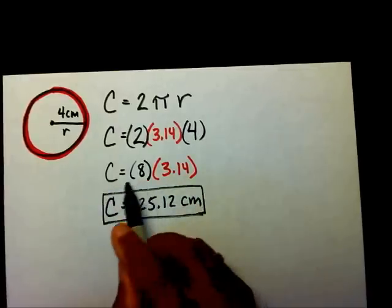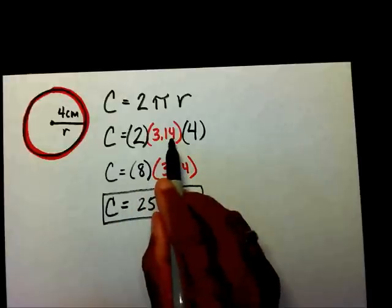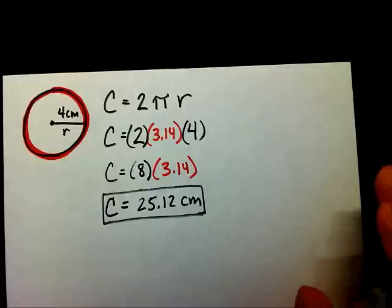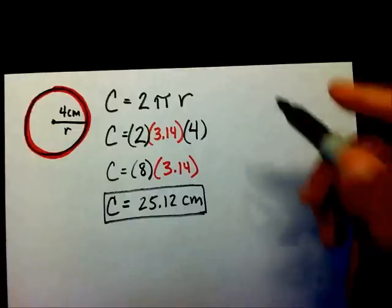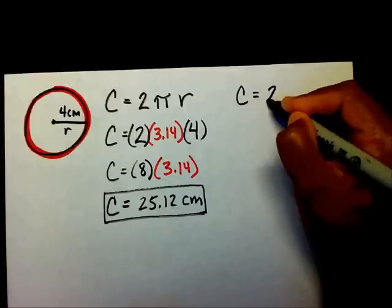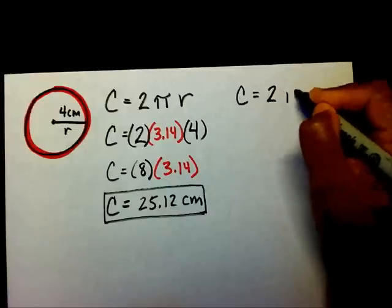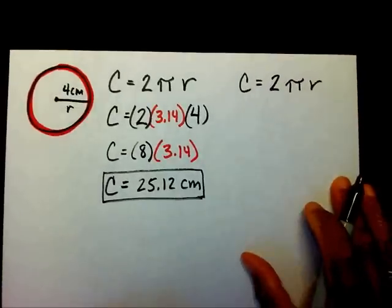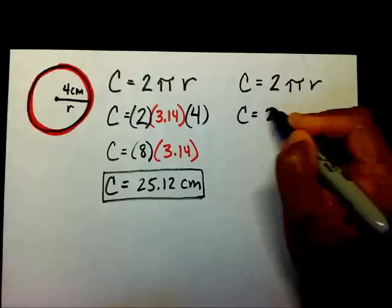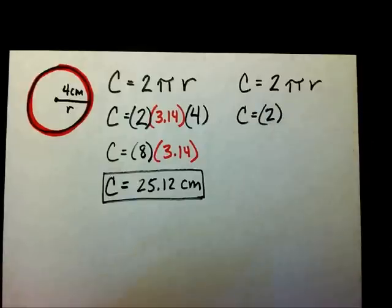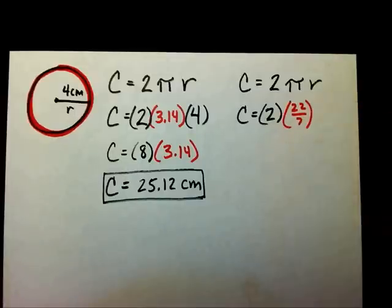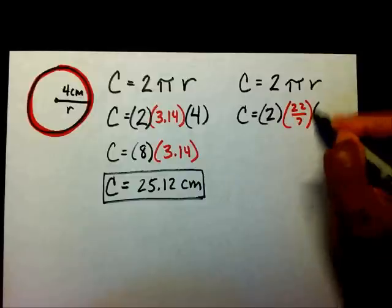This is my circumference using 3.14, which is an approximation — it's close but not exact. Now let's find the circumference using 22 over 7. I'll write down the formula C equals 2 pi r, but instead of writing 3.14, I'm going to write 22 sevenths. And my radius is 4 centimeters again.